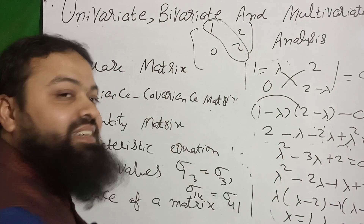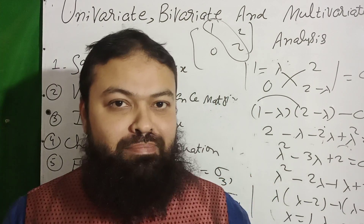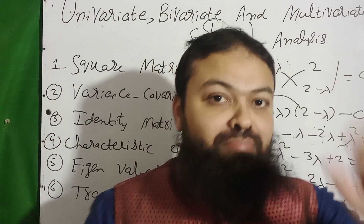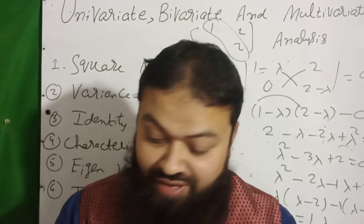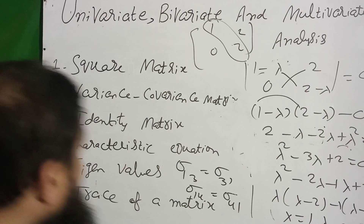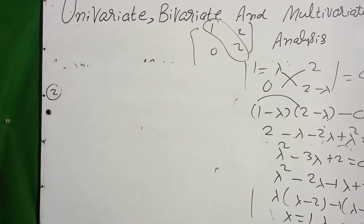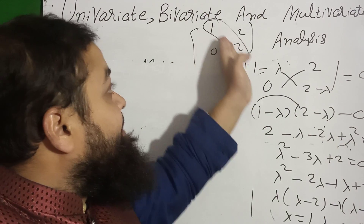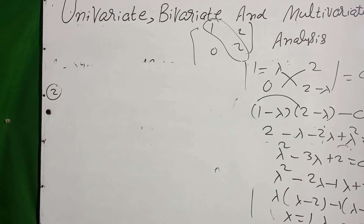What you should learn: the characteristic equation is determinant of (A minus lambda I) = 0, and the eigenvalues must be the diagonal values of the given matrix. Next is the trace of the matrix — the sum of the diagonal values is the trace of the matrix. Now I will discuss some important exam questions on this topic.